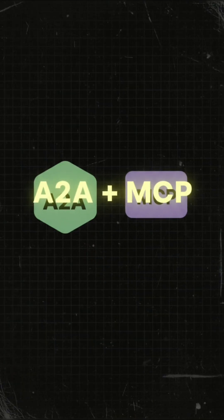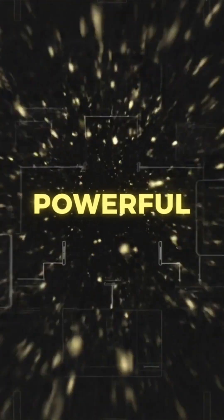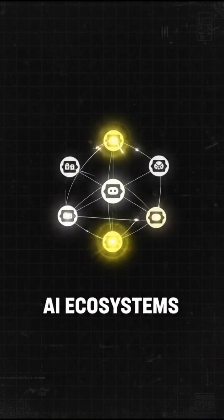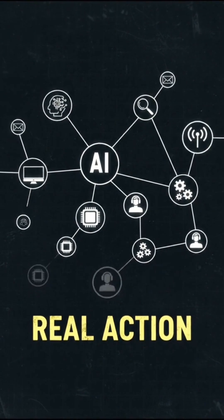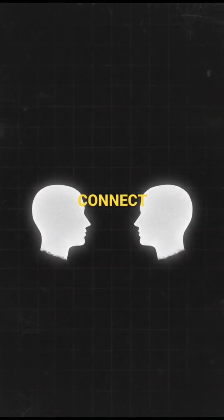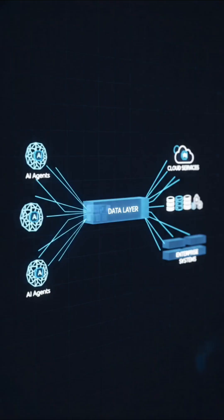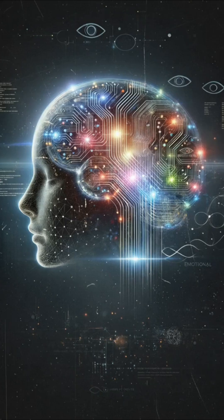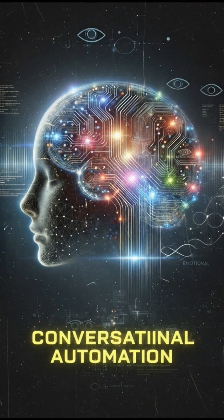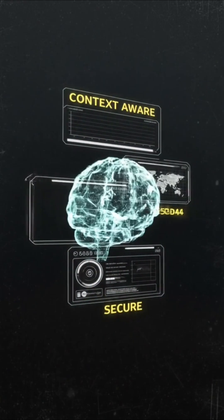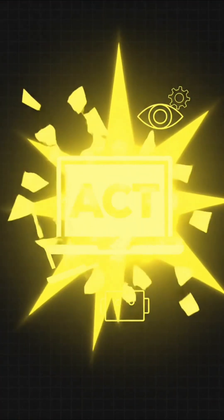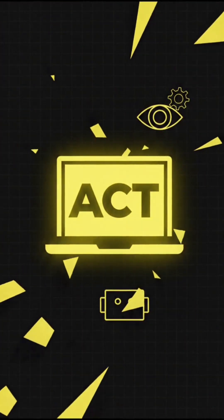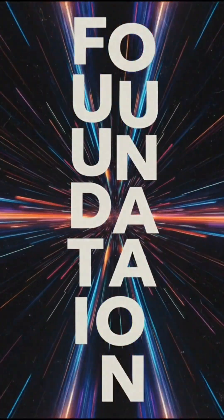When you combine A2A and MCP, you get something powerful: AI ecosystems where agents not only collaborate, but also take real action. A2A connects agents together; MCP connects those agents to enterprise systems. This means intelligent automation that's conversational, context-aware, and secure — where AI can talk, reason, and act inside your environment. It's the foundation of the next generation of agentic workflows in Azure and beyond.